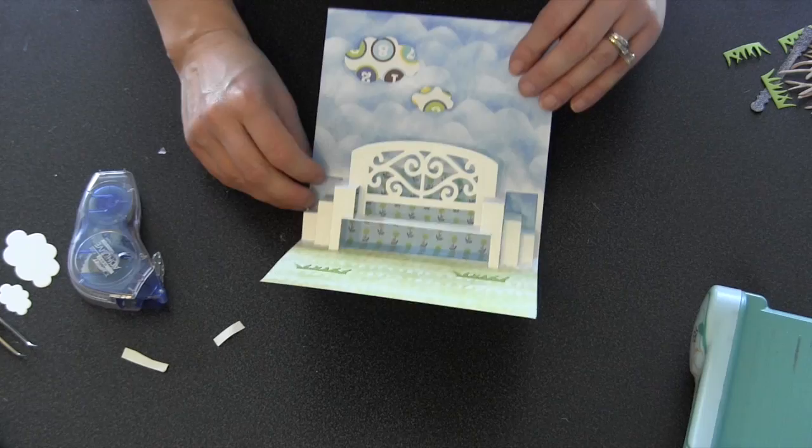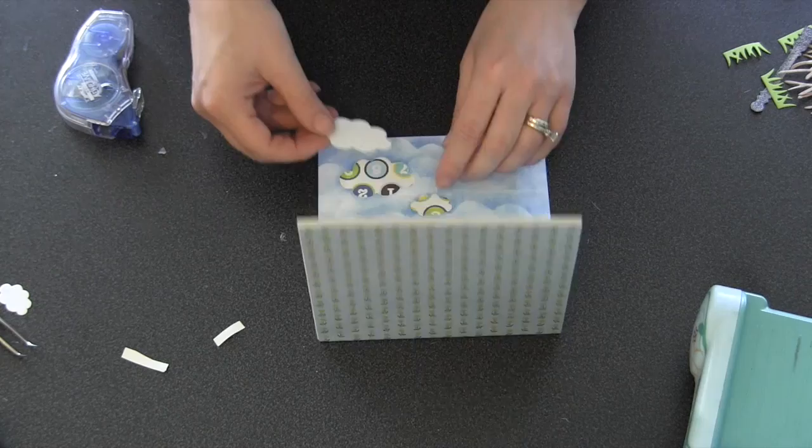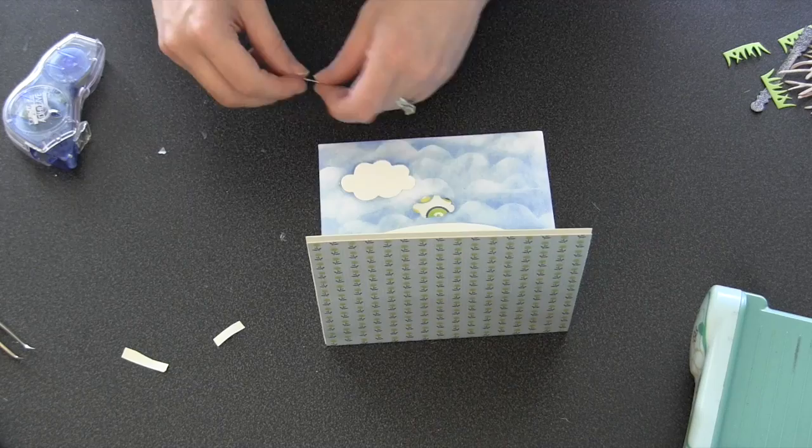Now you can see when I open the card, you can see the back side of that paper through the holes where the clouds used to be. So now I can go ahead and add some adhesive behind my little white clouds and get those into those little holes to be the little inlaid clouds.